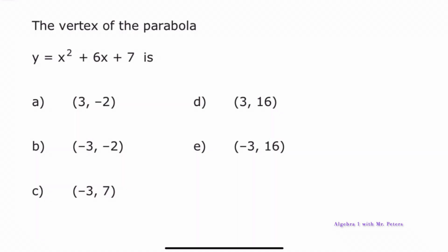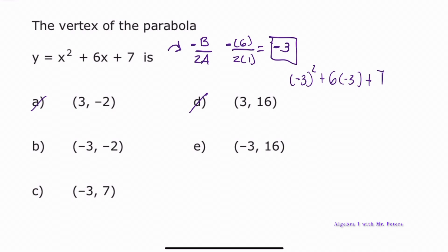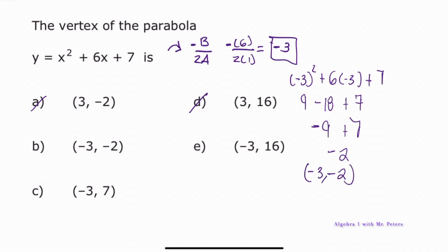They ask for the vertex of the parabola. The first method is to use −b/(2a): b = 6, so we get −6/(2·1) = −3, which is the x-coordinate of the vertex. We can eliminate choices D and A. Plugging x = −3 back in: (−3)² + 6(−3) + 7 = 9 − 18 + 7 = −2. So the vertex is at (−3, −2), and the answer is B.